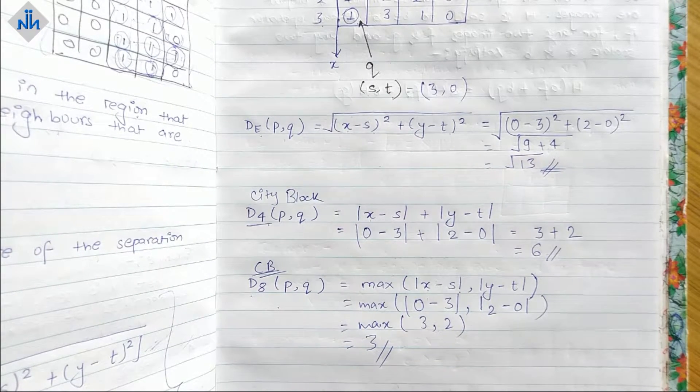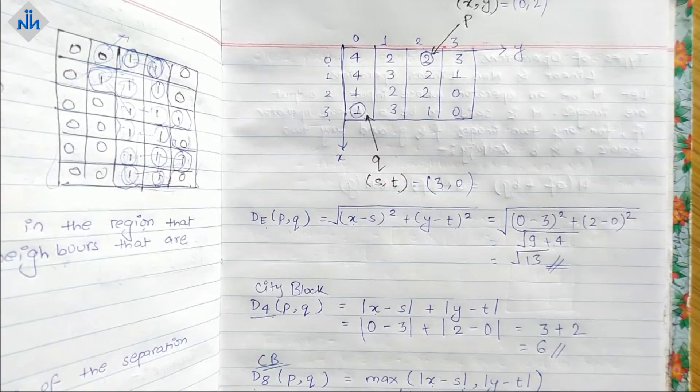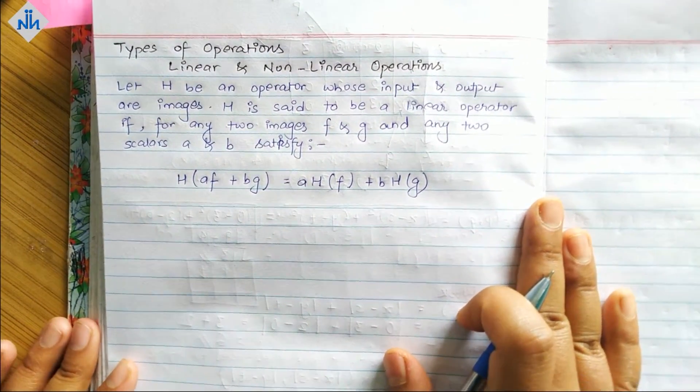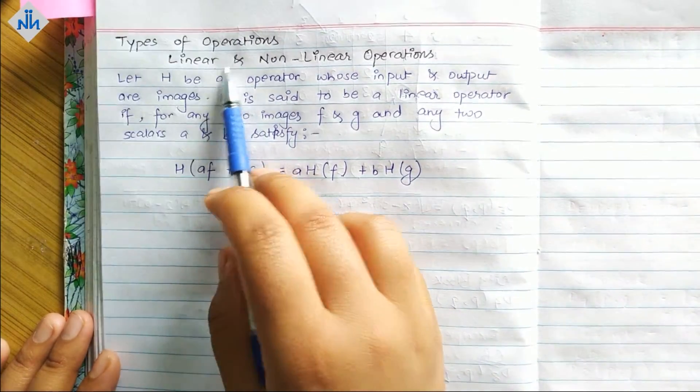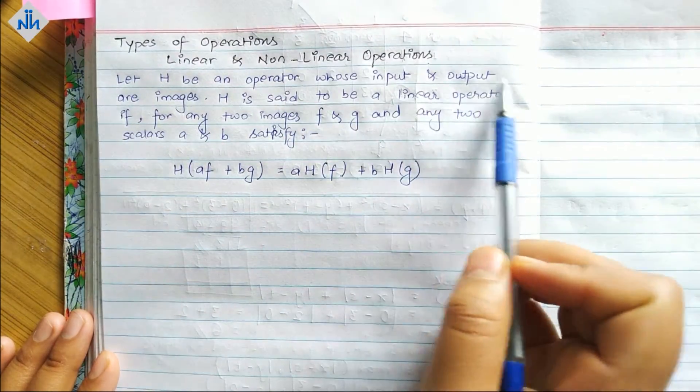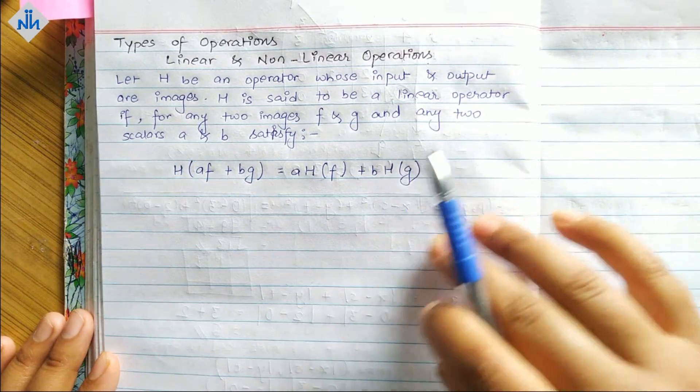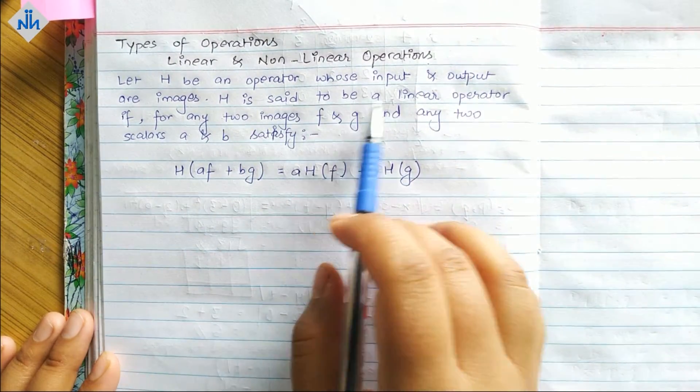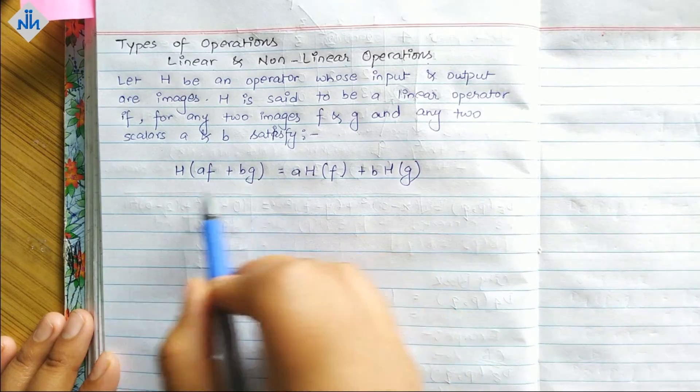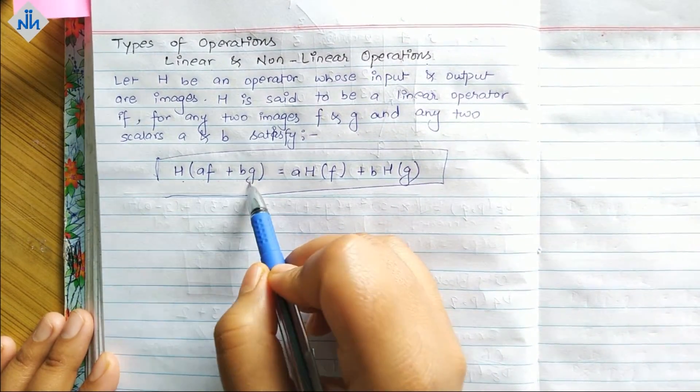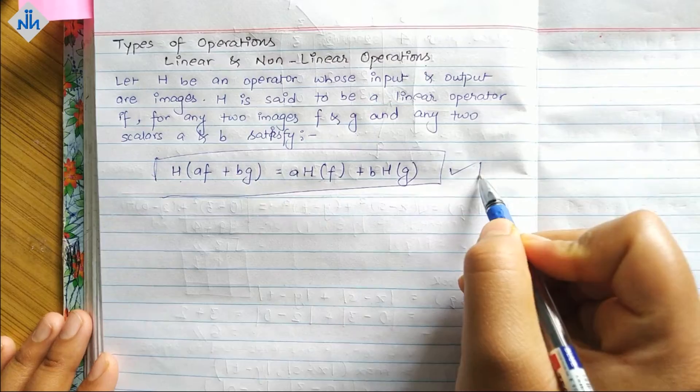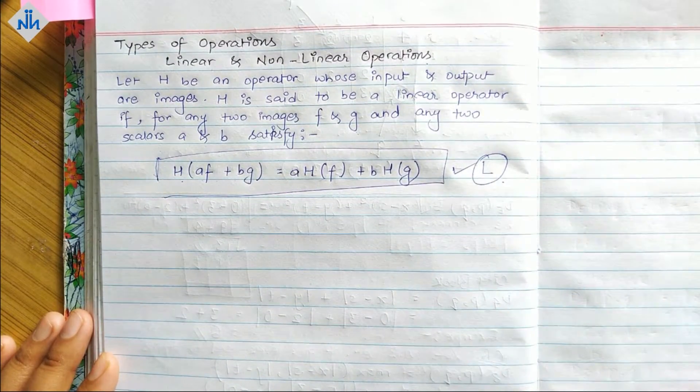Now there is a small concept in DIP that is types of operations: linear and non-linear operations. Let H be an operator whose input and output are images. H is said to be a linear operator if for any two images f and g and any two scalars a and b, this is satisfied: H(af + bg) = a·H(f) + b·H(g). If this is satisfied then it is called linear, otherwise it is called non-linear operation.